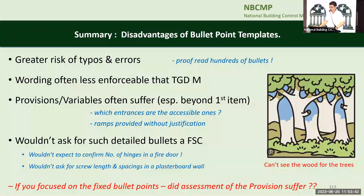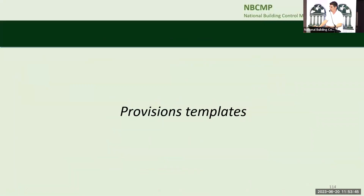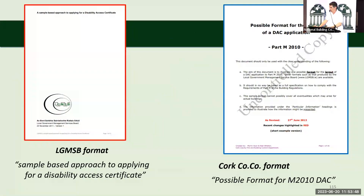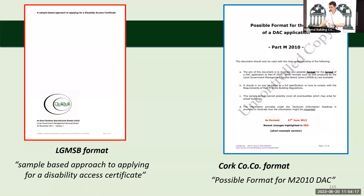Moving on to provisions templates. There might be another one out there, but these are the two main ones. Both came out in 2012 when Part M 2010 was coming into effect. There's the Local Government Management Service Board version — just Google 'sample based approach' and you'll find it. And there's the Cork County Council template — Google 'possible format for M 2010' and you'll find it on our website.